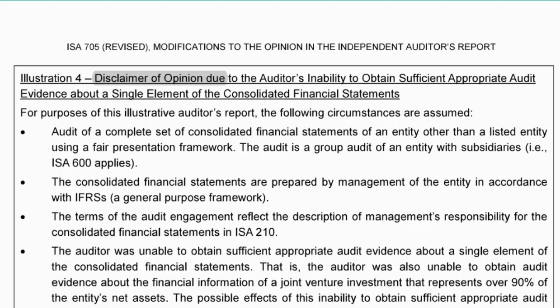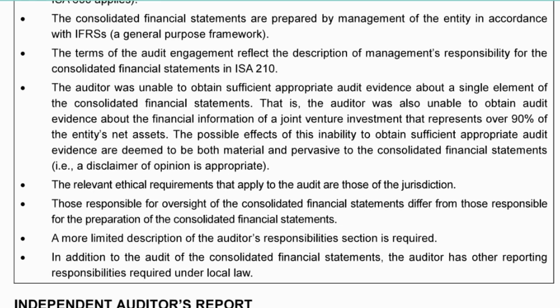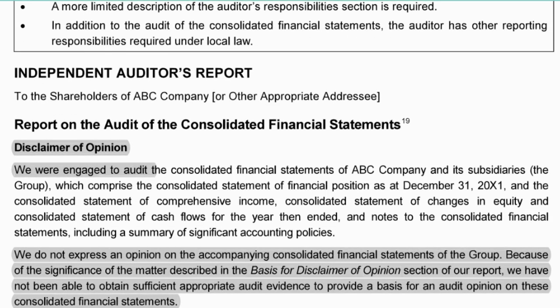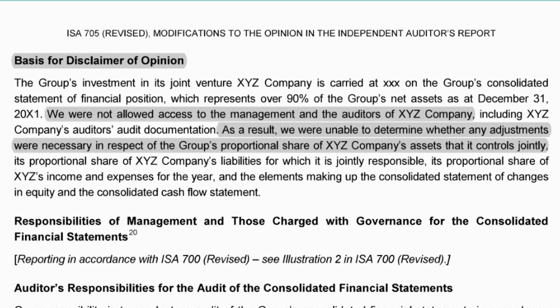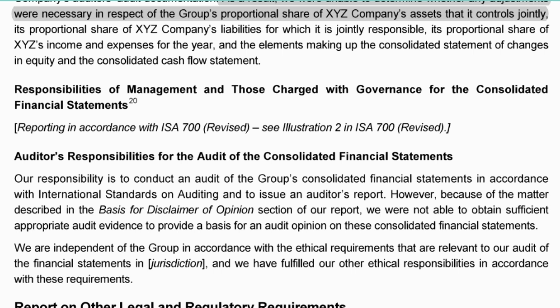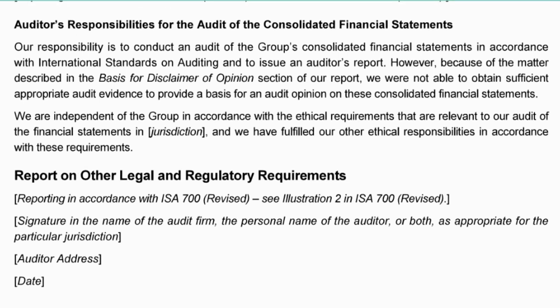In illustration four for a disclaimer of opinion: the key difference is that you do not say 'we audited' — instead you note that you were engaged to audit. Then you state that you do not express an opinion because of the reasons included in the basis paragraph, where you explain why you could not access the information needed. There is no key audit matters paragraph in a disclaimer because nothing can be significant enough to override the fact that no opinion is being expressed. Next is a look at the key audit matters paragraph.